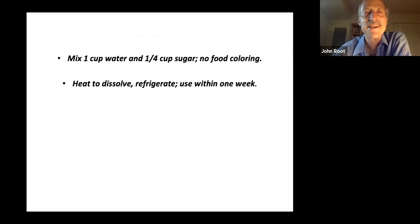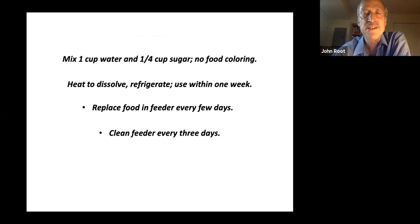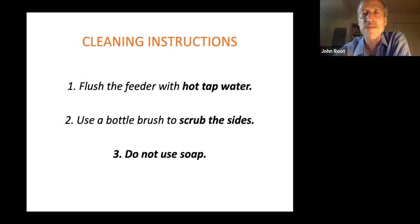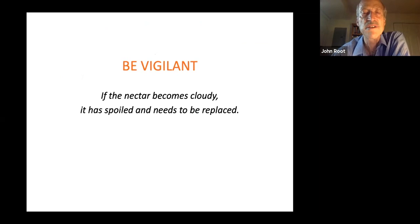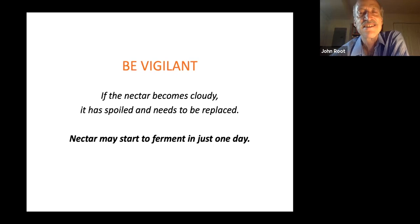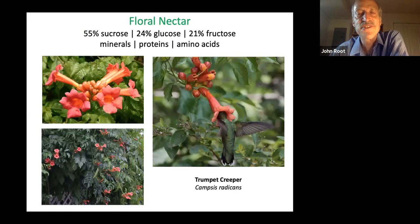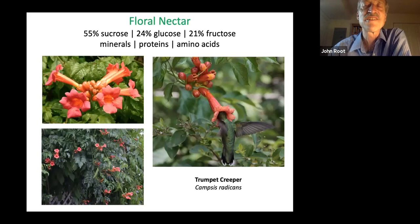Don't use anything except plain white sugar at a four-to-one ratio. Heat to dissolve it, refrigerate, use within one week, and replace the food every few days. Clean that feeder every three days with hot tap water, scrub the sides — don't use soap, as soap residue is bad for hummingbirds. If you see black mold, soak your feeder in a solution of bleach and water at a one-to-64 ratio for one hour. The nectar will become cloudy and spoil often in hot weather — in fact, that can happen in just one day. There is so much responsibility involved in making sure we're helping rather than harming hummingbirds by offering sugar water.